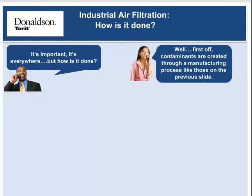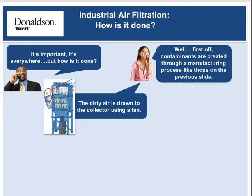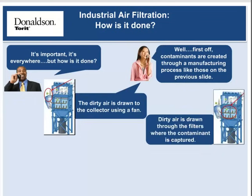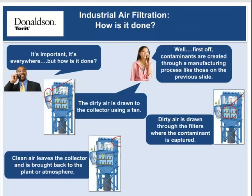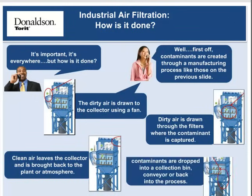But how is it done? First, contaminants are created through a manufacturing process. The dirty air is drawn to the collector using a fan. Dirty air is drawn through the filters where the contaminant is captured. Clean air leaves the collector and is brought back to the plant or atmosphere. When the filters are cleaned, contaminants are dropped into a collection bin, conveyor, or back into the process.